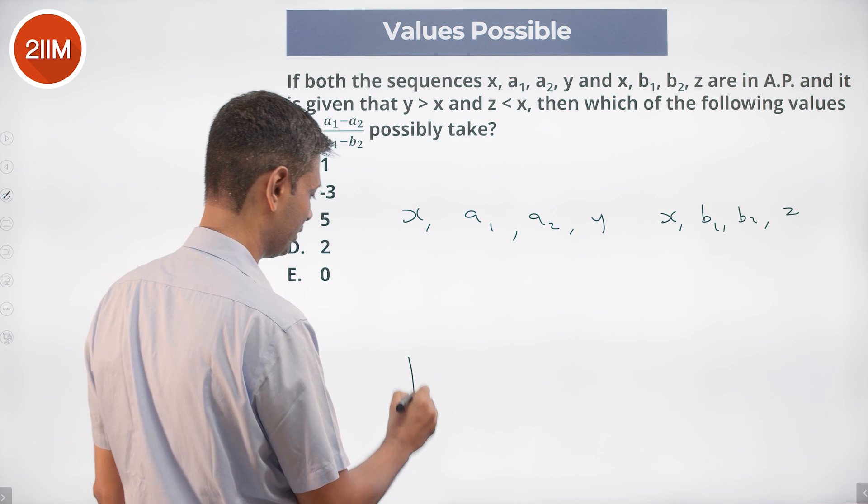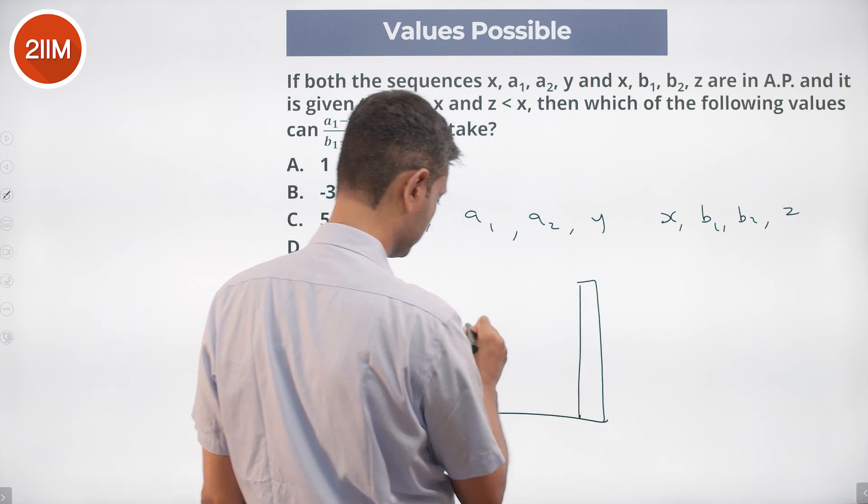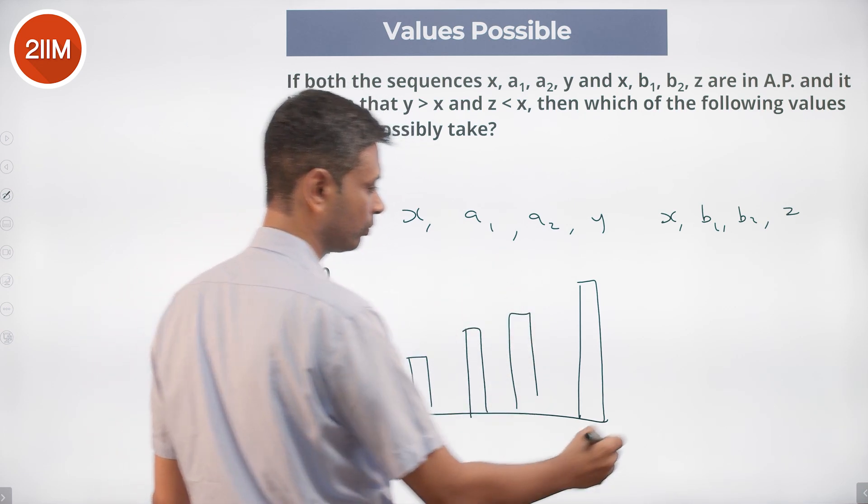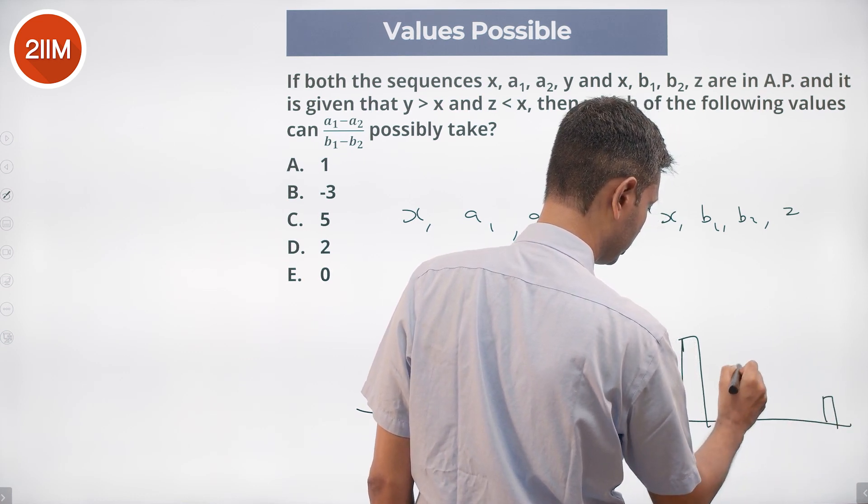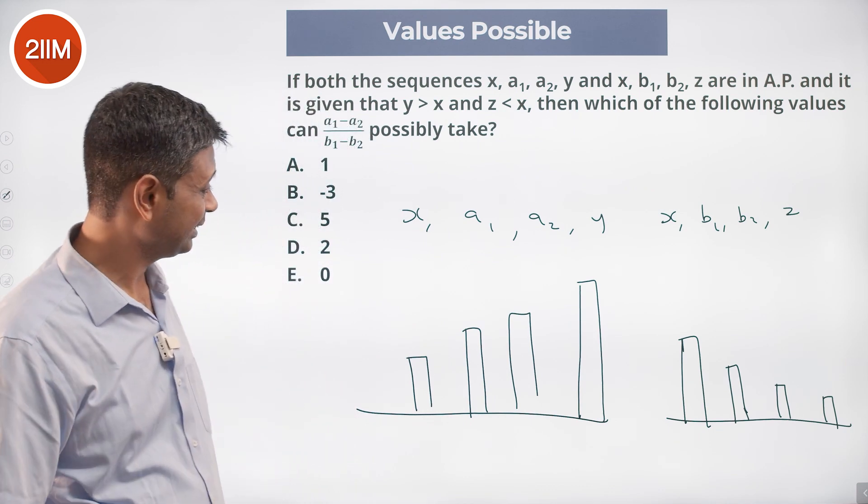So x is like this, y is greater, there's an increasing AP here. Z is less than x, there's a decreasing AP. Both arithmetic progressions, one increasing, one decreasing.